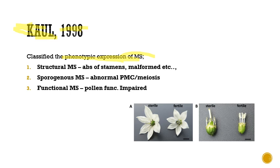The first classification is structural male sterility, which arises due to the absence of stamens or due to malformation of any floral parts. The second is sporogenous male sterility, due to abnormal formation of pollen mother cells or anomalies occurring during meiosis. The third is functional male sterility, where the male reproductive organs are almost normal but pollen function is impaired or weakened.